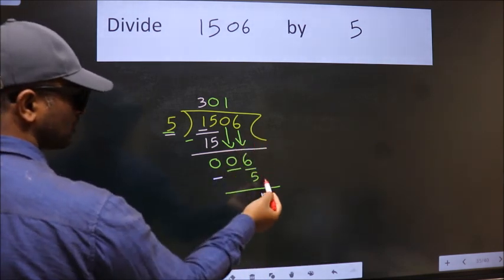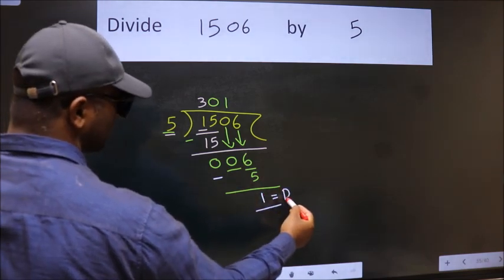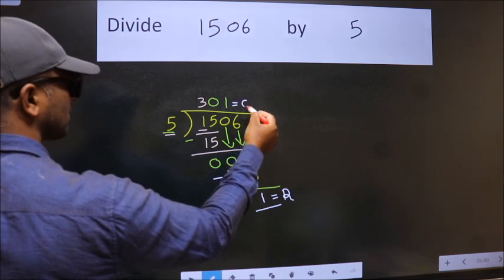No more numbers to bring it down. So, we stop here. This is our remainder, and this is our quotient.